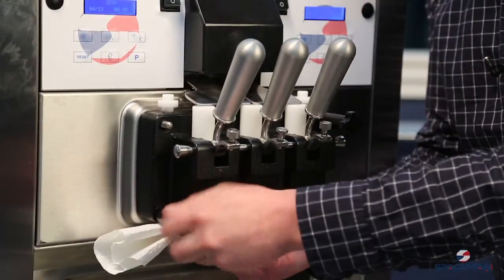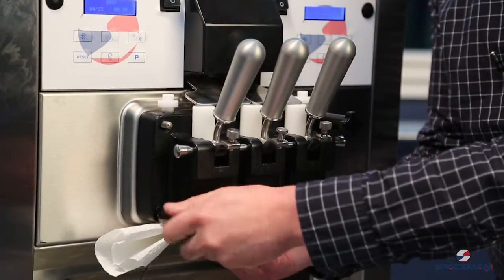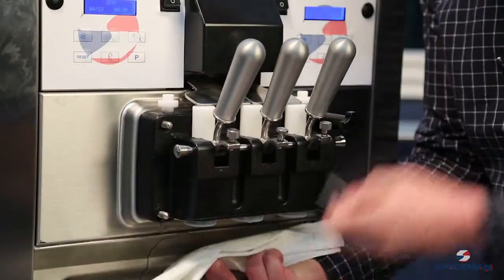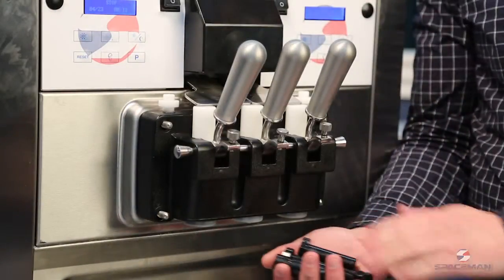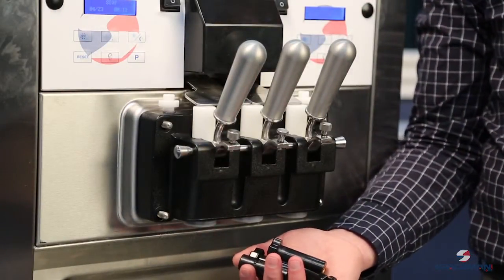The next thing we're going to do is remove the hand screws. A little bit of water will come out the bottom, so make sure that you're holding a towel. Our hand screws will go to the sink for washing.